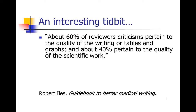As I was preparing these lectures, I came across something interesting in the book Guidebook to Better Medical Writing. It says about 60% of reviewers' criticisms pertain to the quality of the writing or the tables and graphs, and only about 40% pertain to the quality of the scientific work. I don't know where that statistic came from, but it really resonates with me. In my own experience as a reviewer, probably more than half of my comments have to do with problems with the writing and data presentation, as opposed to real methodological problems in the scientific work. So if you want to get published, good writing and good data presentation can really help you.